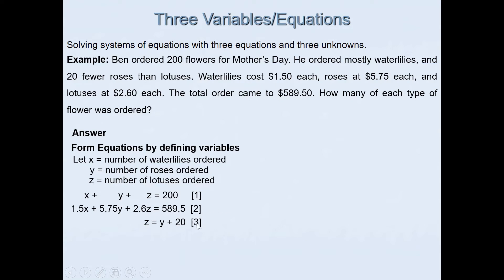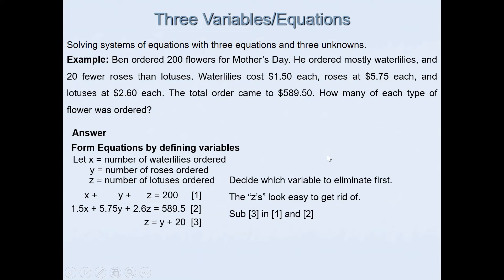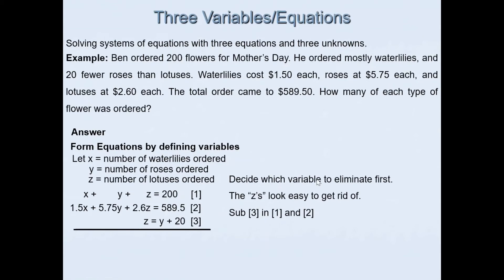Now that we have all three equations, we decide which variable to eliminate first. It's easy to eliminate z because we already have z = y + 20. We'll substitute this expression into the first and second equations, replacing z with y + 20 in both.